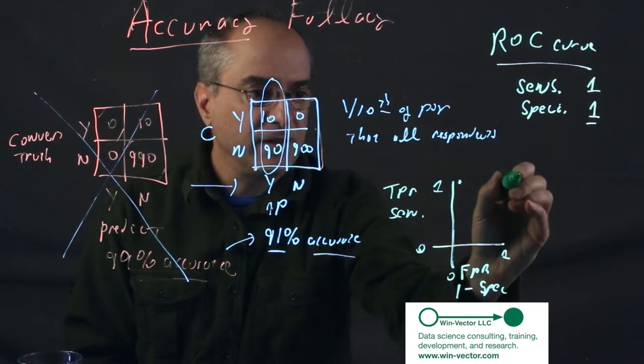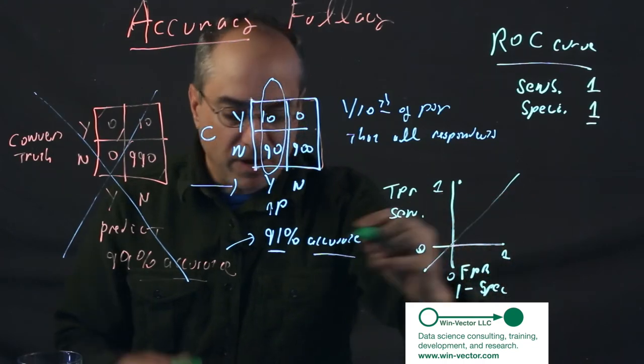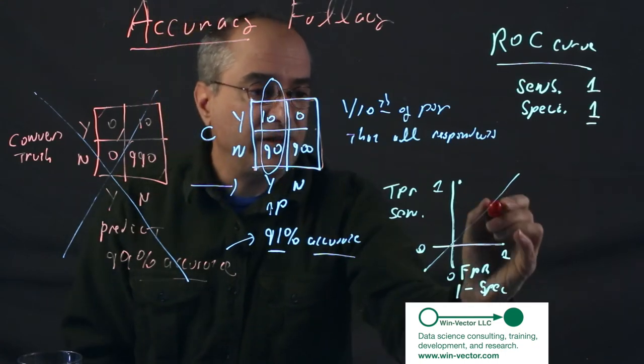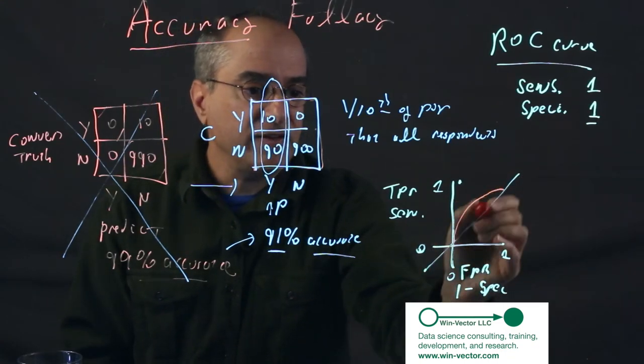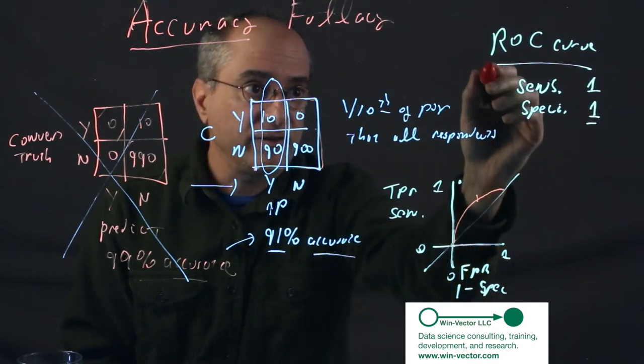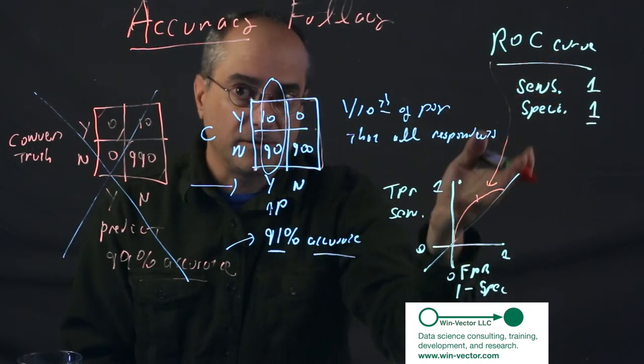We said we want the 1-1 classifier. We want this. The diagonal line is useless. And our model score can achieve, if we have a model that returns a numeric score, we can achieve any sensitivity, specificity trade-off on this curve. And this is the ROC curve. Receiver Operating Characteristic curve or plot.